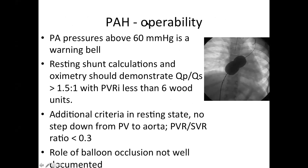PAH operability in general: pulmonary artery systolic pressure more than 60 mmHg is a warning bell — easily obtained by tricuspid regurgitation jet on echocardiography. Resting shunt calculation in the cath lab and oximetry should demonstrate more than 1.5:1 shunt with PVRI less than 6 units for calling it operable in the resting state. Additional criteria: there should not be a step-down from pulmonary vein to aorta, meaning no systemic desaturation, and PVRI to SVRI ratio should be less than 0.3. The role of balloon occlusion in ASD is not well documented.